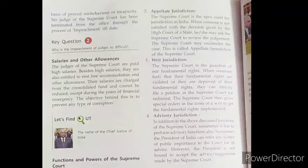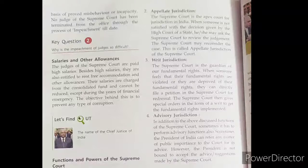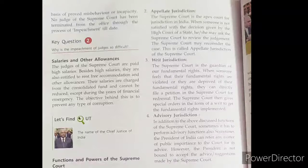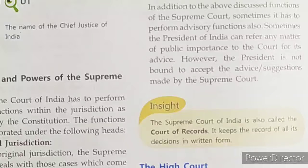Writ jurisdiction: the judiciary protects the fundamental rights of citizens. The judiciary can issue writs or directions to the concerned authorities. The Supreme Court is the guardian of our fundamental rights. When someone feels their fundamental rights are violated, they can directly file a petition in the Supreme Court for redressal. Advisory jurisdiction: the court gives advice on matters relating to the Constitution. The Supreme Court is also called the Court of Records because it keeps a record of all its decisions in written form.